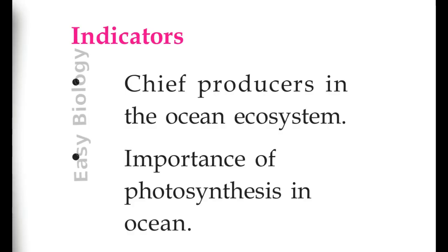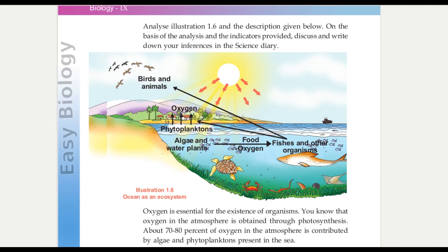Second indicator, importance of photosynthesis in ocean. Oxygen is essential for the existence of organisms. Oxygen in the atmosphere is obtained through photosynthesis. About 70 to 80% of oxygen in the atmosphere is contributed by algae and phytoplanktons present in the sea.